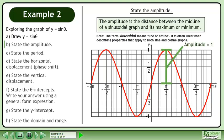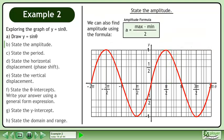By inspecting the graph, we can see that the distance between the midline and maximum is 1, so the amplitude is 1 unit. We can also find amplitude using the formula amplitude equals max minus min over 2. The maximum value of the graph is 1, and the minimum value of the graph is negative 1.